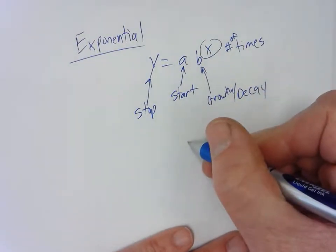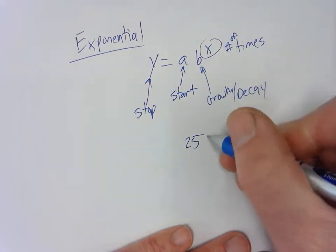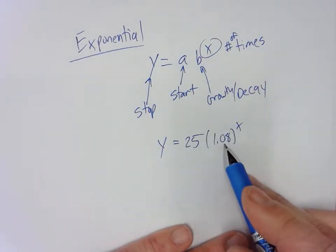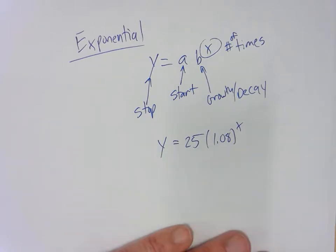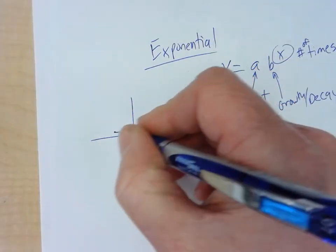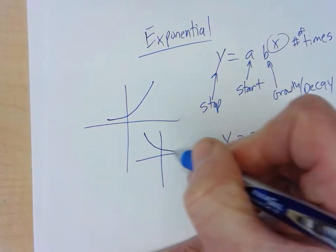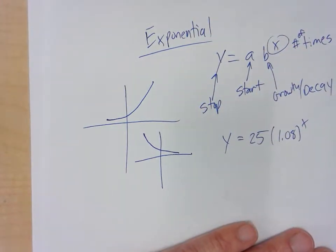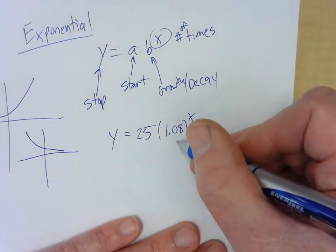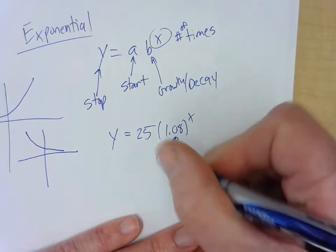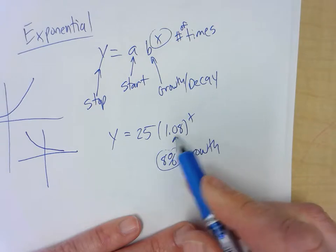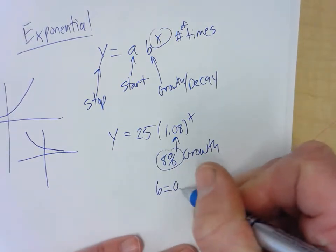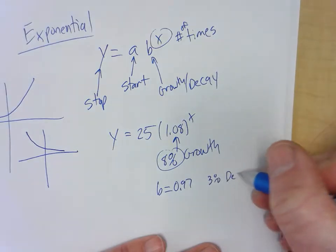For example, 25 bacteria in a petri dish with an 8% growth rate. Exponential functions curve upward for growth or downward for decay. You can tell growth or decay based on b: when b is greater than 1, it's growth — like 1.029 for 2.9% growth. If b equals 0.97, that's a 3% decay.